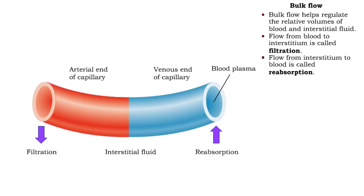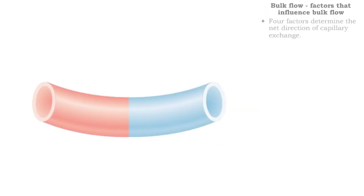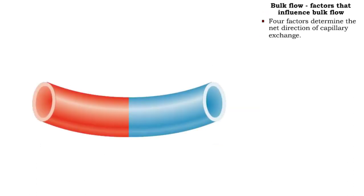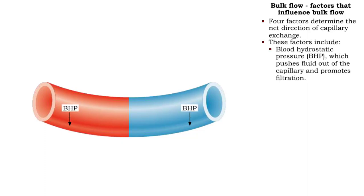Bulk flow is given two names depending on the direction of movement. There are four factors that determine the net direction of capillary exchange. Blood hydrostatic pressure, generated by the pumping of the heart, promotes filtration by pushing fluid out of the capillary.